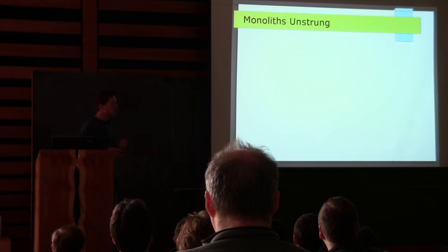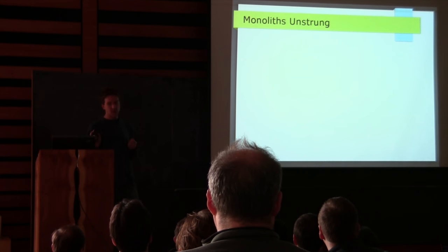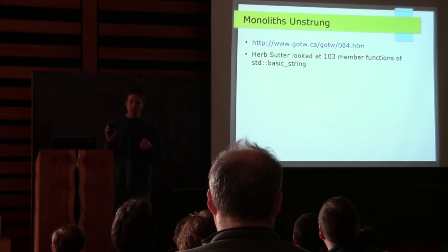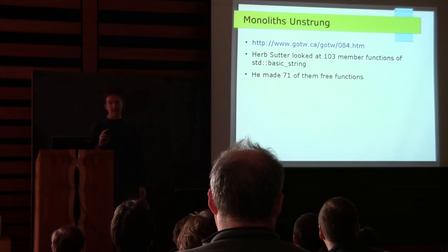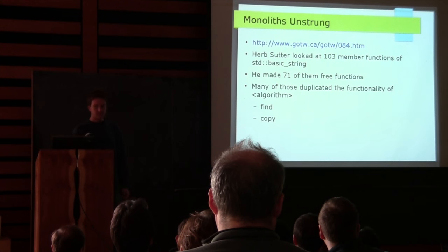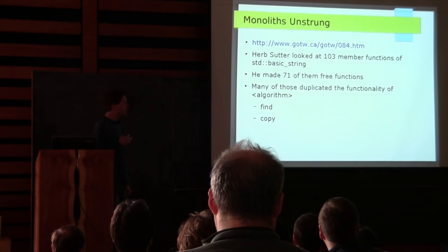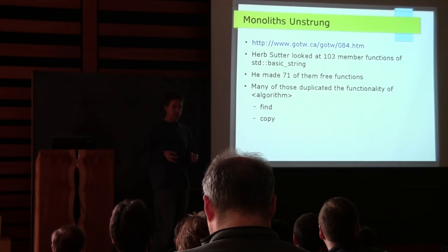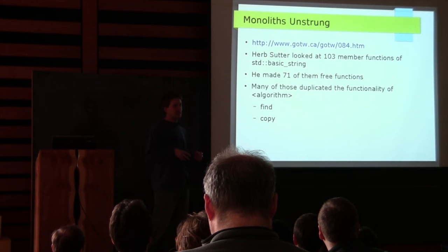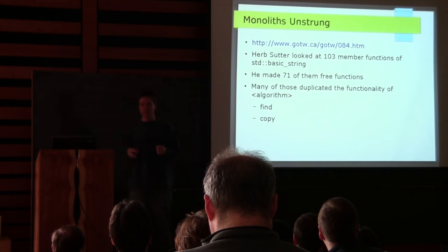Herb Sutter wrote a Guru of the Week article called 'Monoliths Unstrung.' He looked at all 103 member functions, including overloads, that std::string has, and he made 71 of them free functions. Many of those functions duplicated the functionality in the algorithm header — for instance, find and copy. std::basic_string is generally agreed by most people to be a monolithic class: a class that has a whole bunch of stuff in its interface that maybe doesn't need to be there.